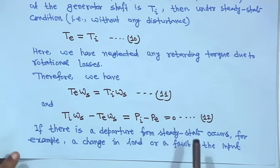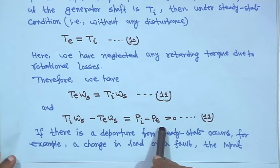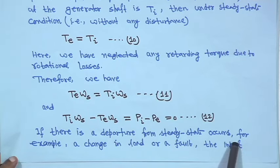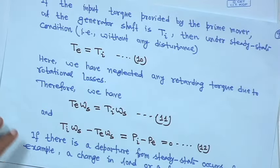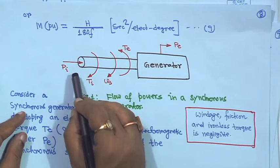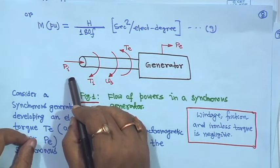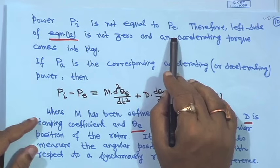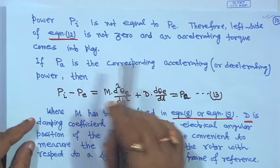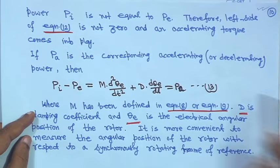If there is a departure from the steady state — for example, a change in load or a fault — then input power P_i is not equal to P_e. Some books use P_m for mechanical input power, but here we use P_i. So P_i is not equal to P_e, meaning the left side of equation 12 is not zero, and an acceleration torque comes into play.